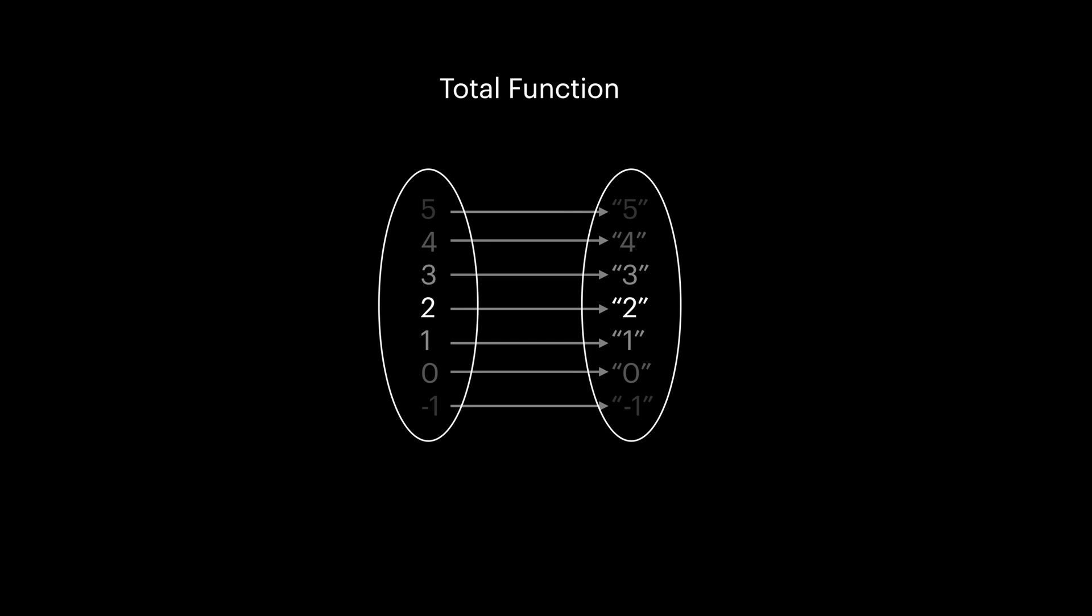In contrast, a function is called partial if there are some values in their input universe that the function is not defined for them. Like for example, a division function is not defined over division by zero. We will look into how we can solve this challenge in functional programming later.